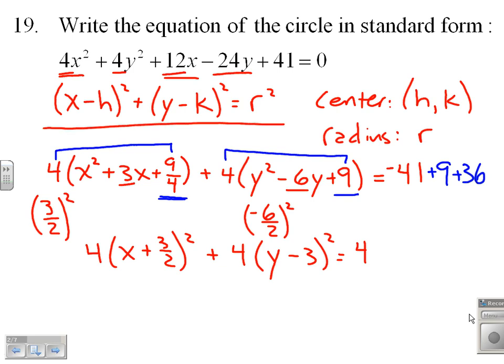And we are almost in this form. We just have to divide both sides by 4. So I end up with x plus 3 halves squared plus y minus 3 squared equals divide both sides by 4, and I get 1.